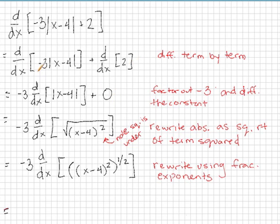In the next step, what I've done is I've factored out the negative 3 in this first derivative. So we're going to put that out in front and all that's left is the absolute value of x minus 4, which we'll be differentiating. And I've differentiated the constant, which just goes to 0.